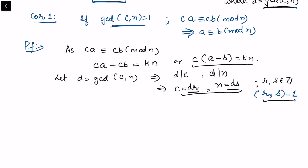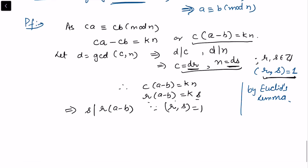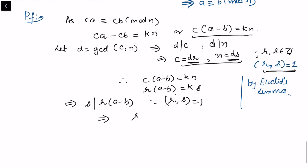Keeping gcd(r, s) = 1 in mind, the equation c(a minus b) = kn reduces to r(a minus b) = k times s. Noting that gcd(r, s) = 1 and applying Euclid's lemma — which I've covered in earlier videos — we can conclude that s divides r(a minus b). Since gcd(r, s) = 1, this implies that s divides a minus b.